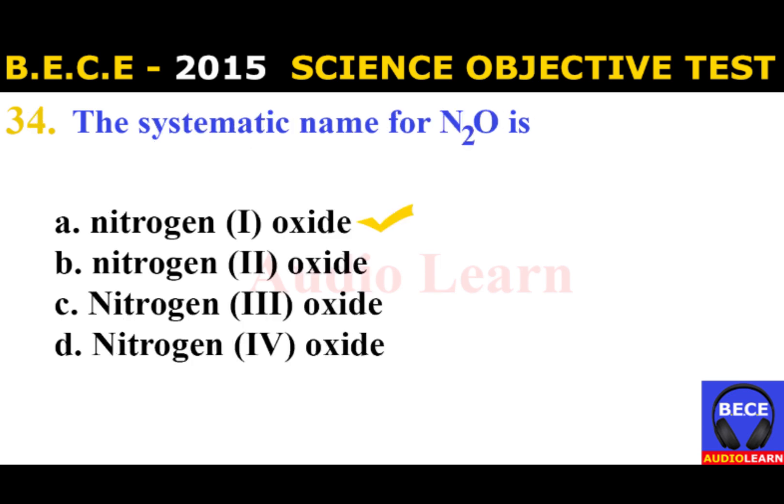Number 34: The systematic name for N₂O is A. Nitrogen one oxide, B. Nitrogen two oxide, C. Nitrogen three oxide, D. Nitrogen four oxide. The answer is A. Nitrogen one oxide. The systematic name for N₂O is nitrogen one oxide.